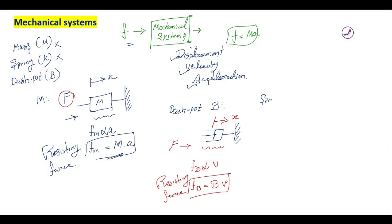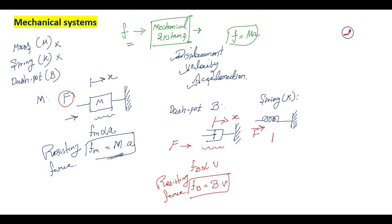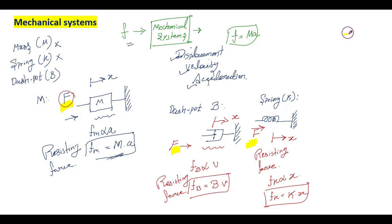The third basic element in a mechanical translational system is the spring. Considering the ideal spring element with a reference point: when an external force is applied, there is a displacement in the direction of the force. The resisting force acting on the spring element is directly proportional to displacement. Taking the proportionality constant: F_K = K times x.